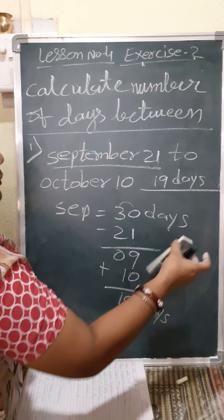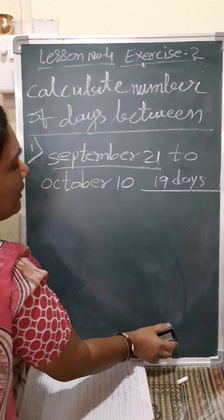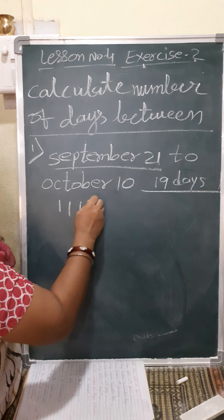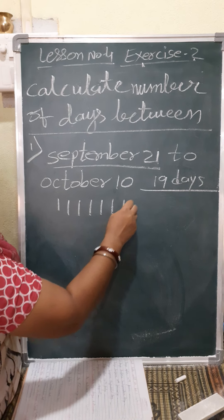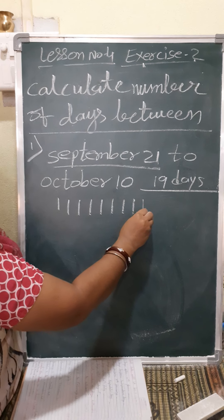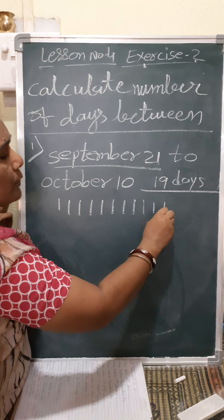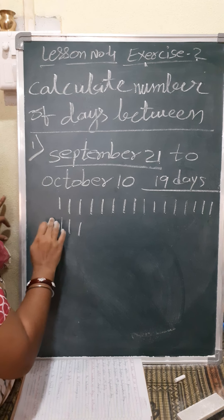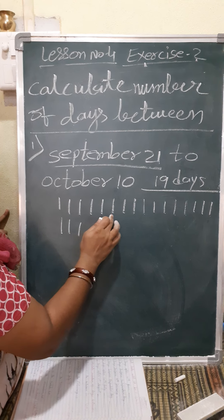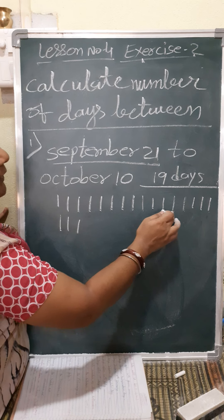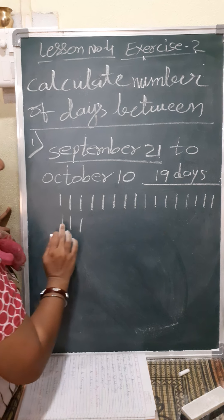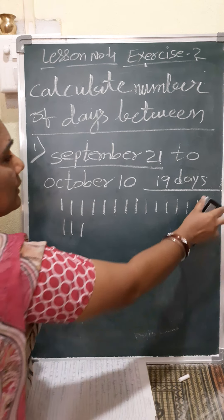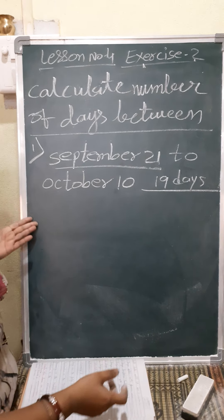Otherwise you can calculate mentally also. After 21 you can count: 22, 23, 24, 25, 26, 27, 28, 29, 30, then October 1, 2, 3, 4, 5, 6, 7, 8, 9, 10 — and counting gives you 1, 2, 3, 4, 5, 6, 7, 8, 9, 10, 11, 12, 13, 14, 15, 16, 17, 18, 19. Same way, 19 came. In this way also you can do — mentally you can calculate.